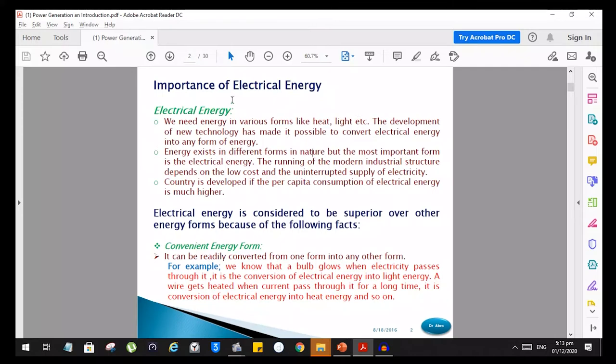Energy exists in different forms in nature, but the most important form is electrical energy. The running of the modern industrial structure depends on the low cost and uninterruptible supply of electricity. Energy exists in a lot of other forms like caloric energy, mechanical energy, chemical energy, and a lot of stuff.